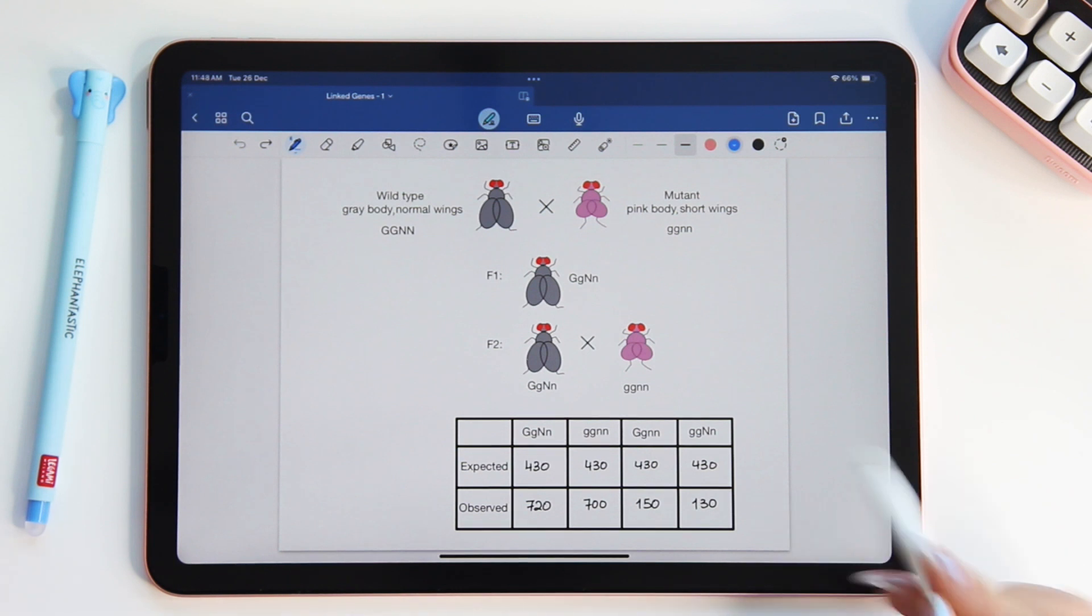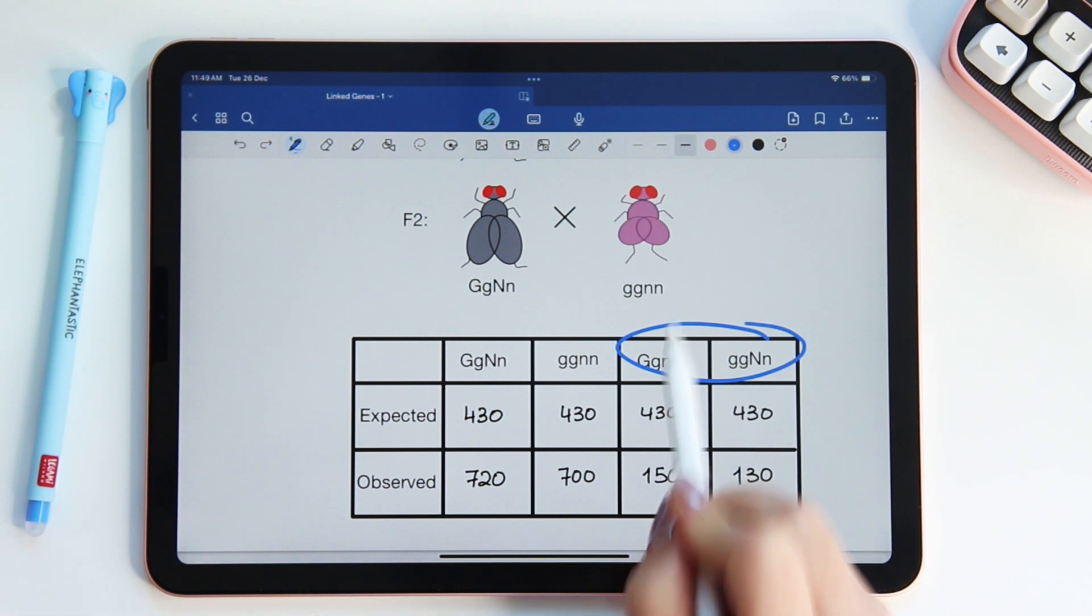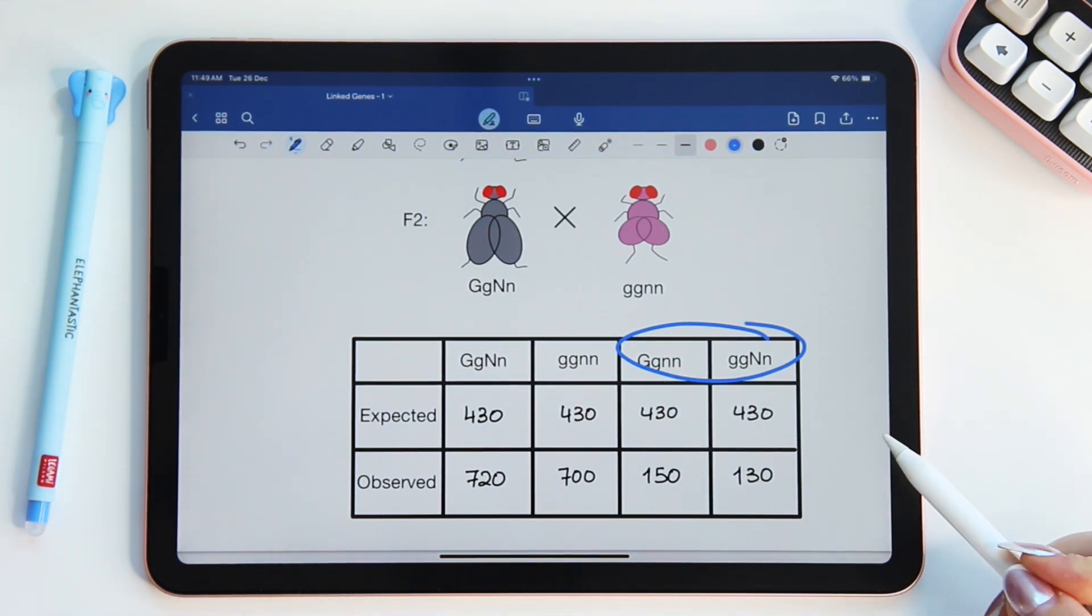After analyzing the results, we determined that the two genes were on the same chromosome and crossing over had occurred. In today's video, we will talk about the relative frequency of the recombinant phenotypes and how the frequency depends on the distance between the linked genes.